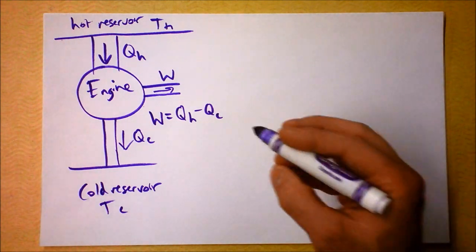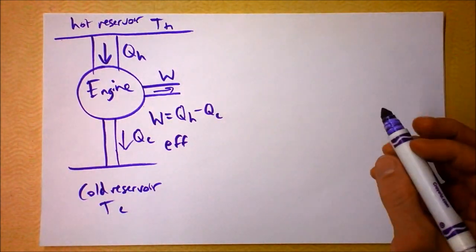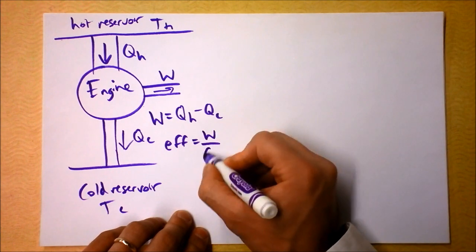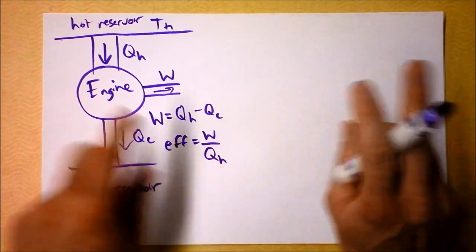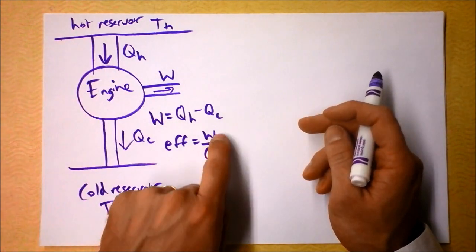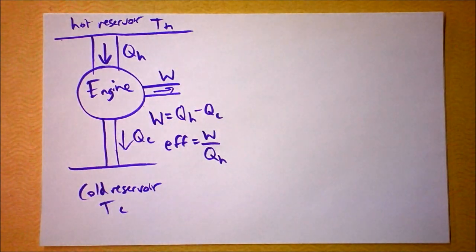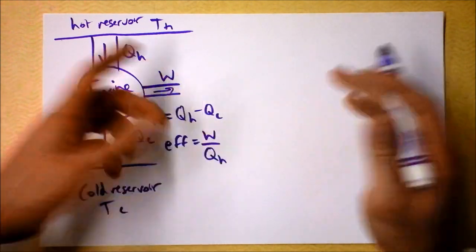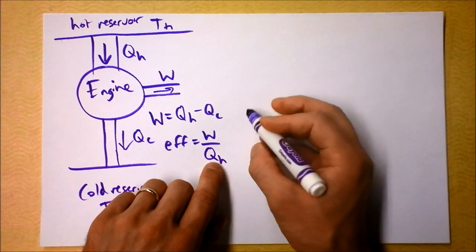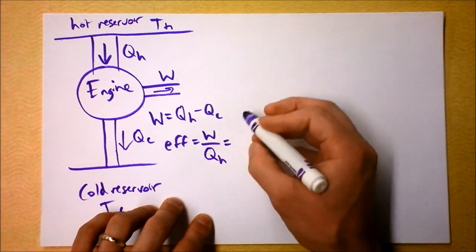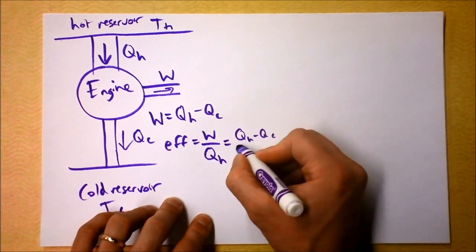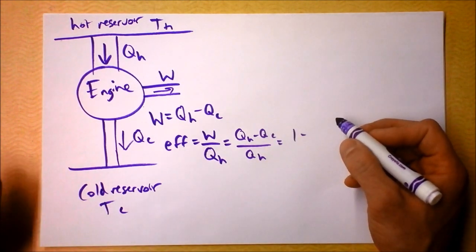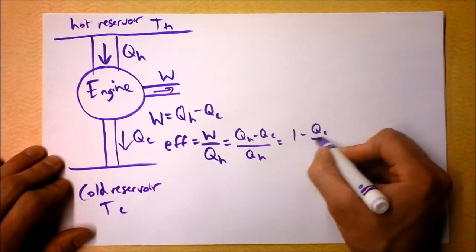We had an equation for efficiency also. Efficiency is defined as work out over work in, because if you work out, you win. The work we have to put in is the heat from the hot reservoir, and the work we get out is the actual usable work — it could be mechanical work or electrical work. So the efficiency is QH minus QC divided by QH, which is the same thing as 1 minus QC over QH.